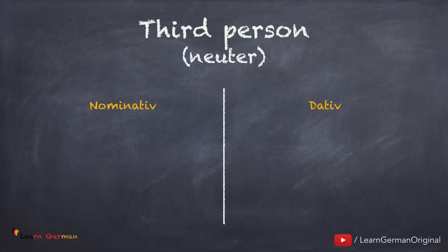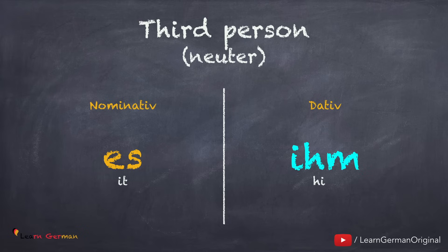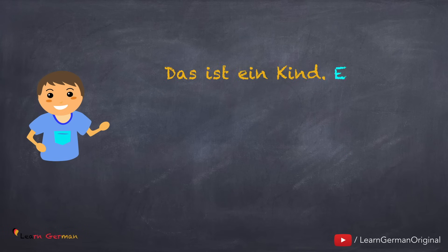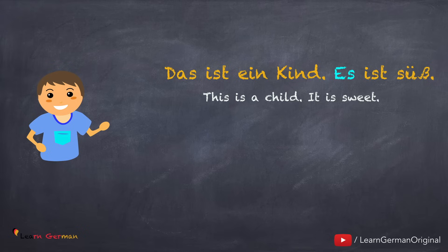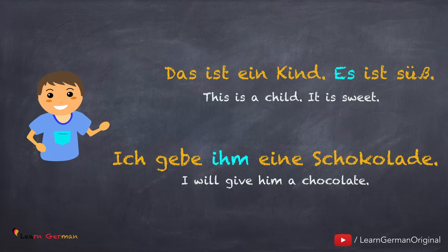Coming to the third person neuter: es in Nominativ, and in dative it's ihm. The dative personal pronoun for es is ihm.